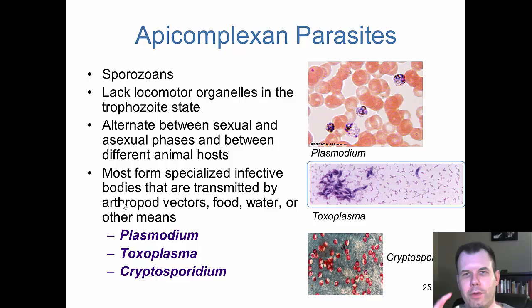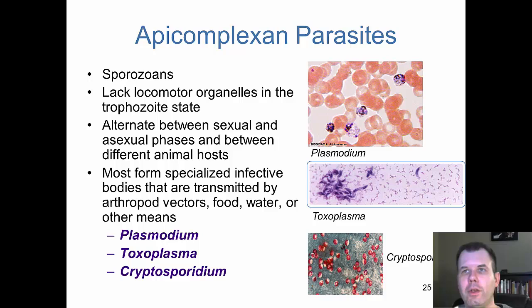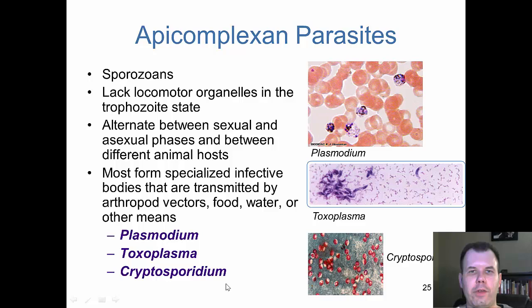Now we look at the last three single-cell protozoa: Plasmodium (malaria), Toxoplasma, and Cryptosporidium. These are known as sporozoans or Apicomplexa because they form spores and have complicated life cycles, alternating between sexual and asexual phases across different animal hosts. Plasmodium is transmitted by mosquitoes; Toxoplasma is passed through cat feces in cyst form; and Cryptosporidium gets into contaminated water supplies and infects the intestines.